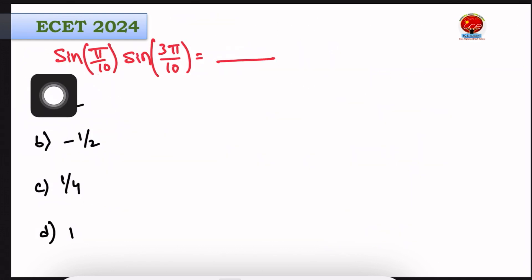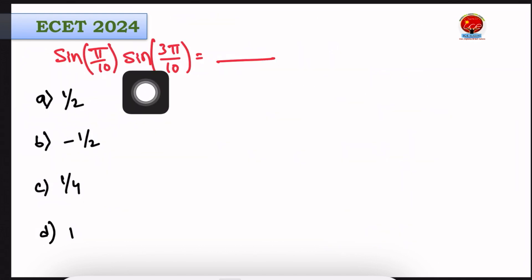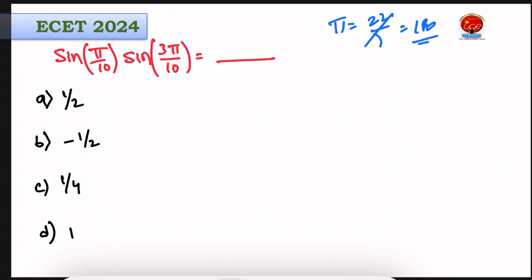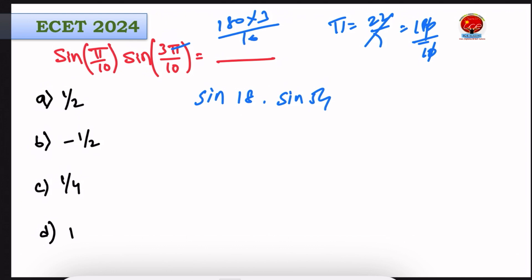Next question: find sin(π/10) multiplied by sin(3π/10). Here π equals 180 degrees. So π divided by 10 gives 18 degrees, and 3π divided by 10 gives 54 degrees. So we need sin 18 degrees multiplied by sin 54 degrees.